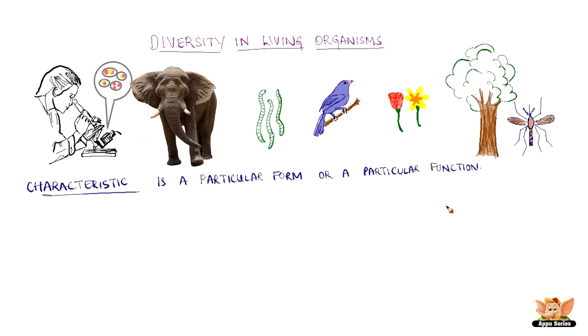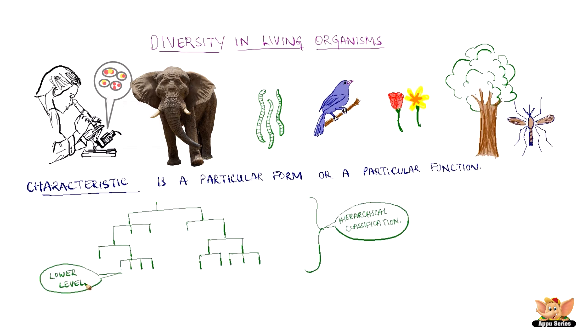A characteristic is a particular form or a particular function. What is the basis of this classification? Organisms can be classified in different ways. We use the hierarchical classification, with the lowermost level having characteristics that decide the broadest divisions among living organisms — meaning they have unique characteristics. The characteristics in any level would be dependent on the previous one and would decide the variety in the next level.